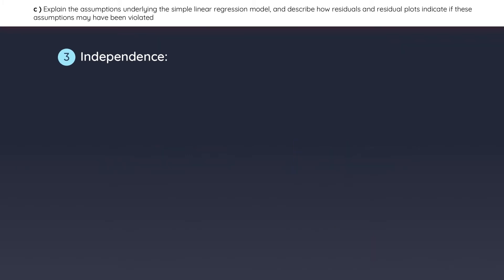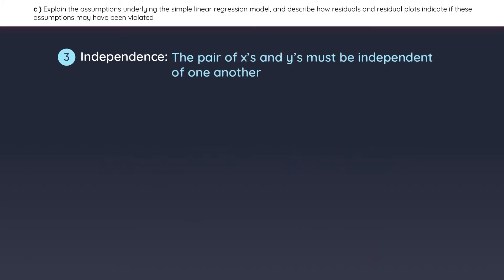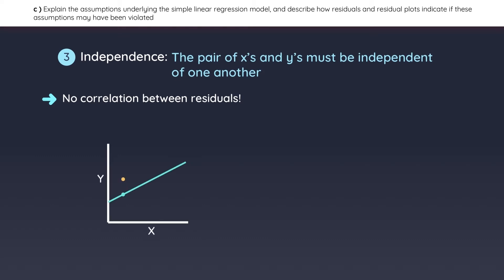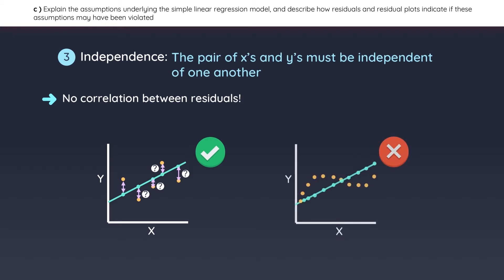The third assumption is independence, which states that the pairs of Xs and Ys must be independent of one another. This also means that there is no correlation between the residuals — just because you know the first residual, that doesn't mean you can predict what the remaining residuals will look like. An example of a violation of this assumption would show a clearly predictable pattern in the residuals.